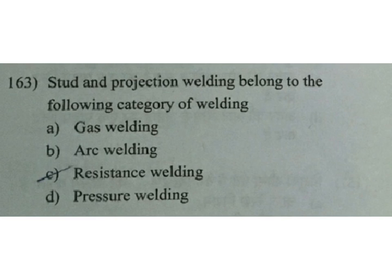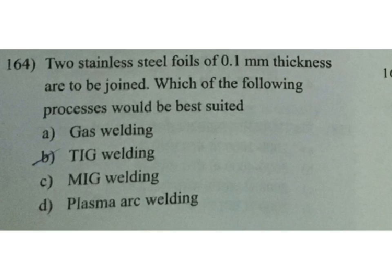Two stainless steel foils of 0.1 mm thickness are to be joined — which of the following processes would be best suited? A gas welding, B TIG welding, C MIG welding, D plasma arc welding. Plasma arc welding is the best answer. TIG welding is also suitable for thin material, but plasma arc welding is the best answer.